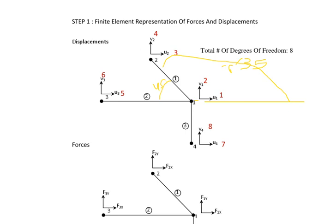For element 2, the orientation is horizontal, so the total angle θ = 180 degrees. For element 3, the angle is 180 plus 90, giving θ = 270 degrees. To summarize: θ for element 1 is 135°, θ for element 2 is 180°, and θ for element 3 is 270°.